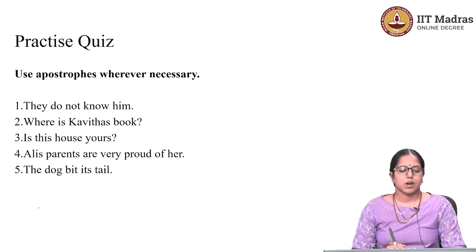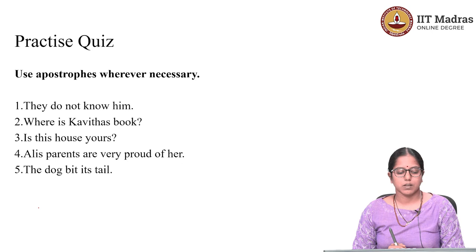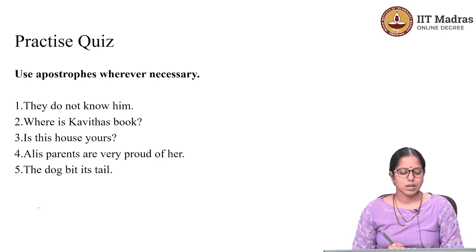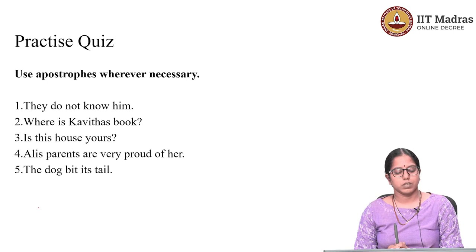Now, coming to the practice exercise — use apostrophe wherever necessary. The five sentences are: one, 'they do not know him'; two, 'where is Kavita's book'; three, 'is this house yours'; four, 'Ali's parents are very proud of her'; five, 'the dog bit its tail.' Pause the video, work on these sentences, and then let us discuss the answers.